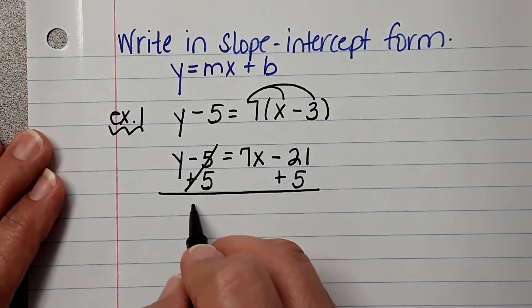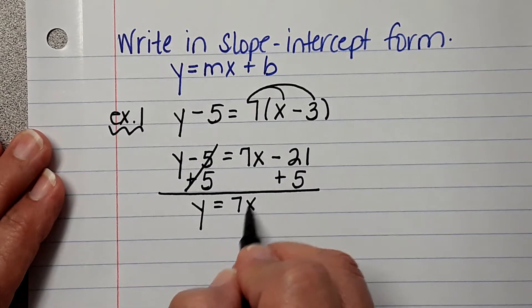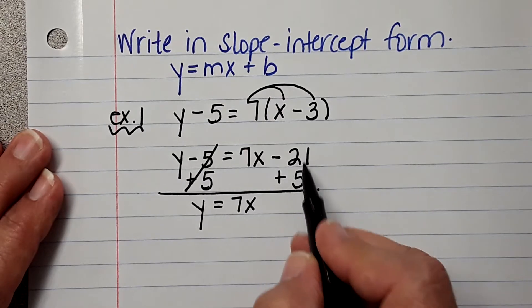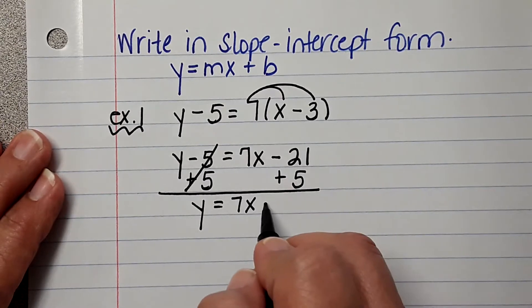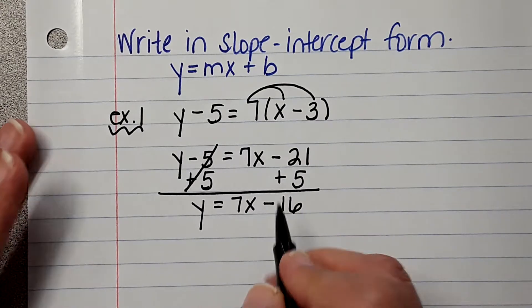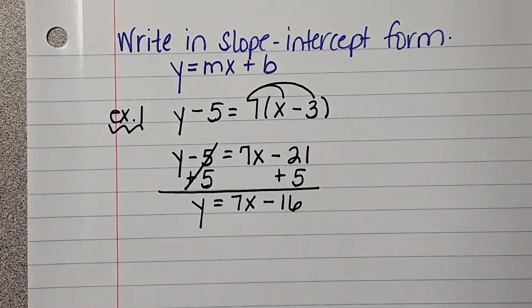So we're going to add 5 to both sides. And then we're left with Y equals 7X, and negative 21 plus 5 is negative 16, and now we are in slope intercept form.